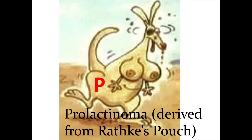Now the last slide: the prolactinoma. Why is it a kangaroo? Because the prolactinoma is derived from Rathke's pouch — the kangaroo has a pouch, right? And notice the enlarged chest there. So the prolactinoma is a pituitary adenoma; the most common is prolactinoma. It's associated with amenorrhea, galactorrhea, and bitemporal hemianopsia — where peripheral vision is really messed up. That's the pituitary adenoma derived from Rathke's pouch.